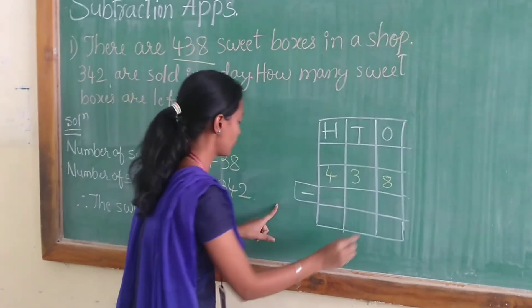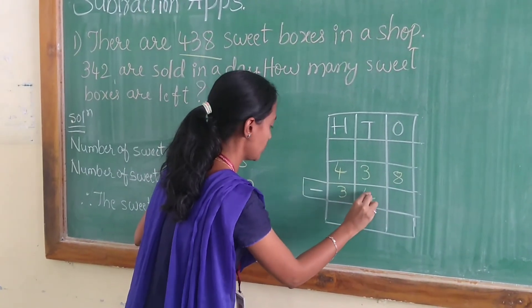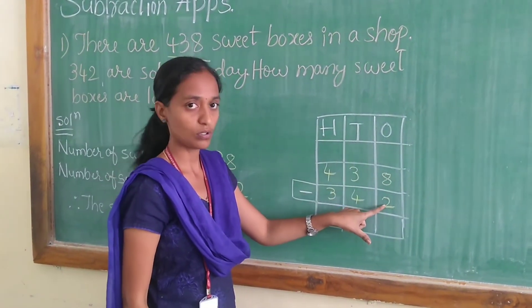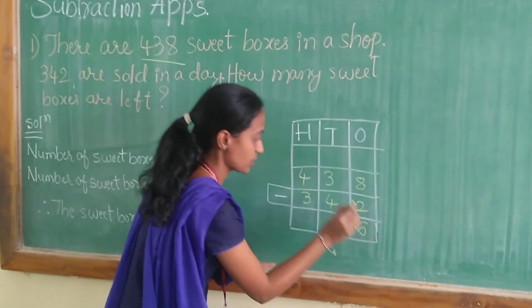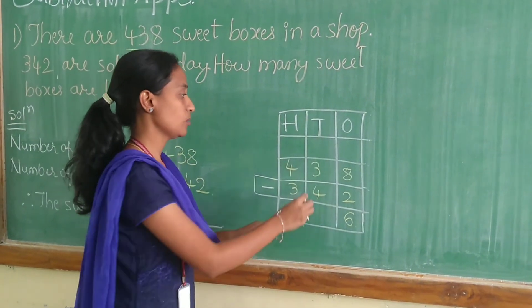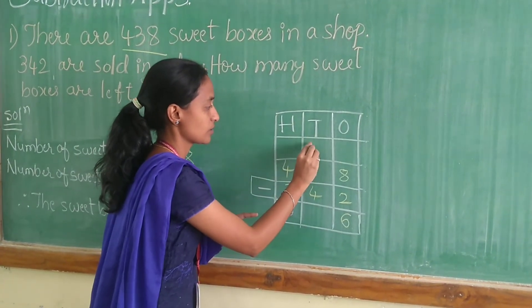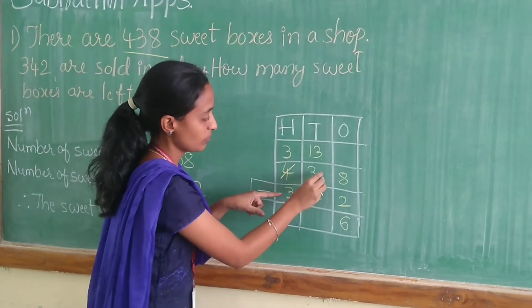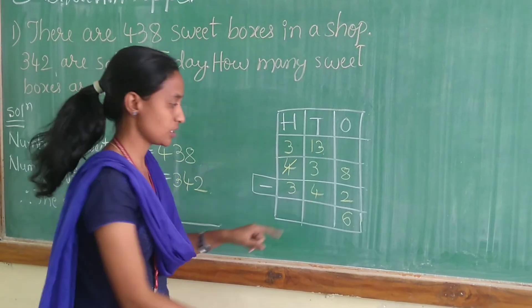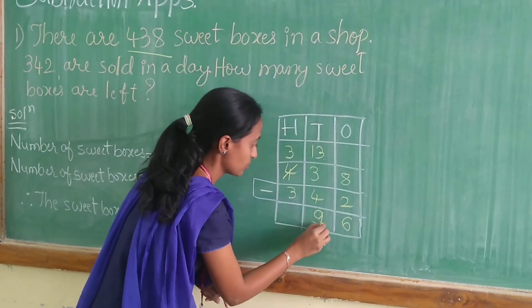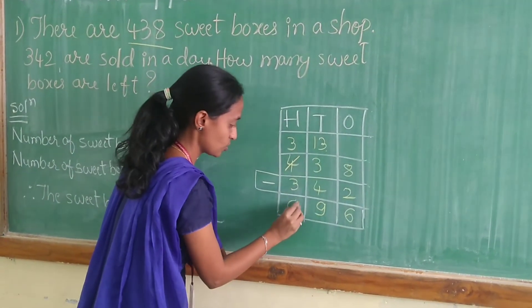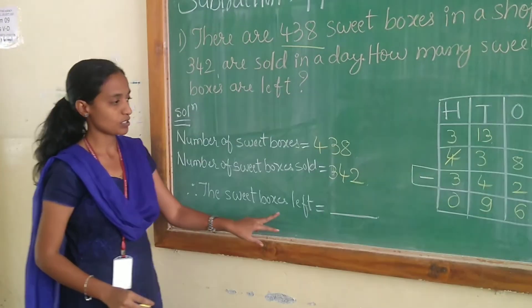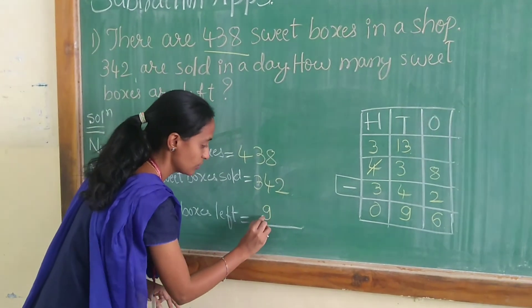438 minus 342. 8 minus 2 is equal to 6. We can't do 3 minus 4, so you have to borrow from 100. So it becomes 13 and 4 becomes 3. So 13 minus 4 is equal to 9. 3 minus 3 will be 0. So the sweetboxes left is equal to 96.